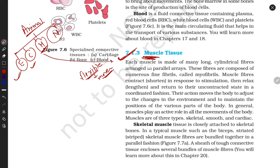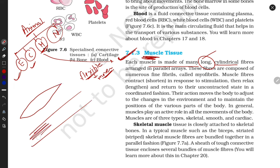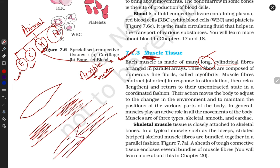Muscles may be long or cylindrical in shape. They might be in various shapes. According to their location, they diverge in their forms - according to their location and according to their work.